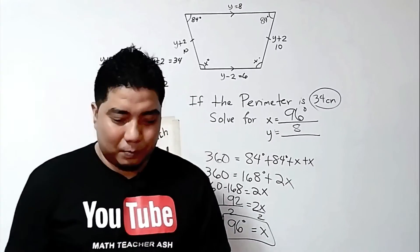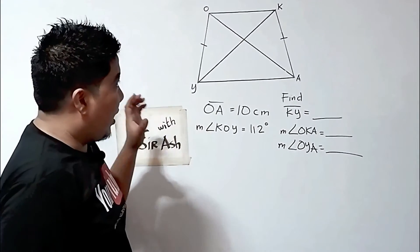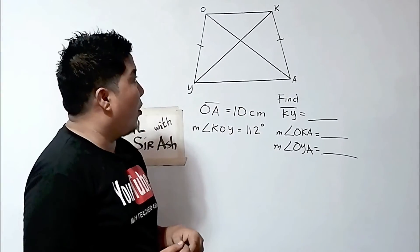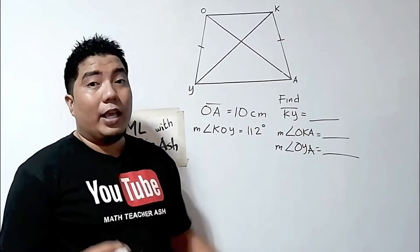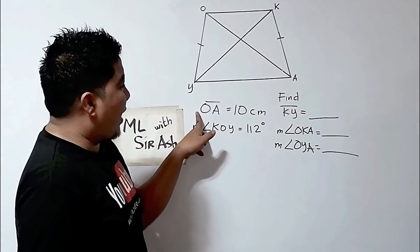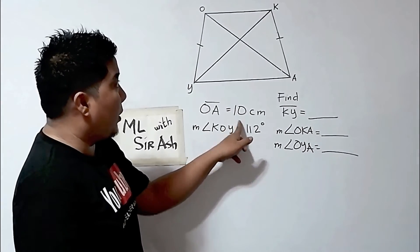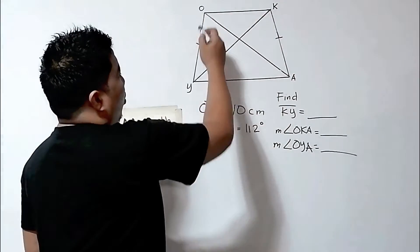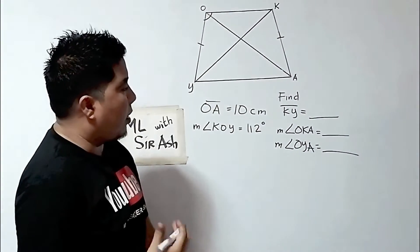Now let us go to our final figure. We are down to our final figure, and this is the trapezoid OKAY. This is still an example of an isosceles trapezoid because the legs are congruent. Here is the given: the measurement of line segment OA, which is the diagonal, is equal to 10 centimeters, and the measurement of angle KOY is 112 degrees.